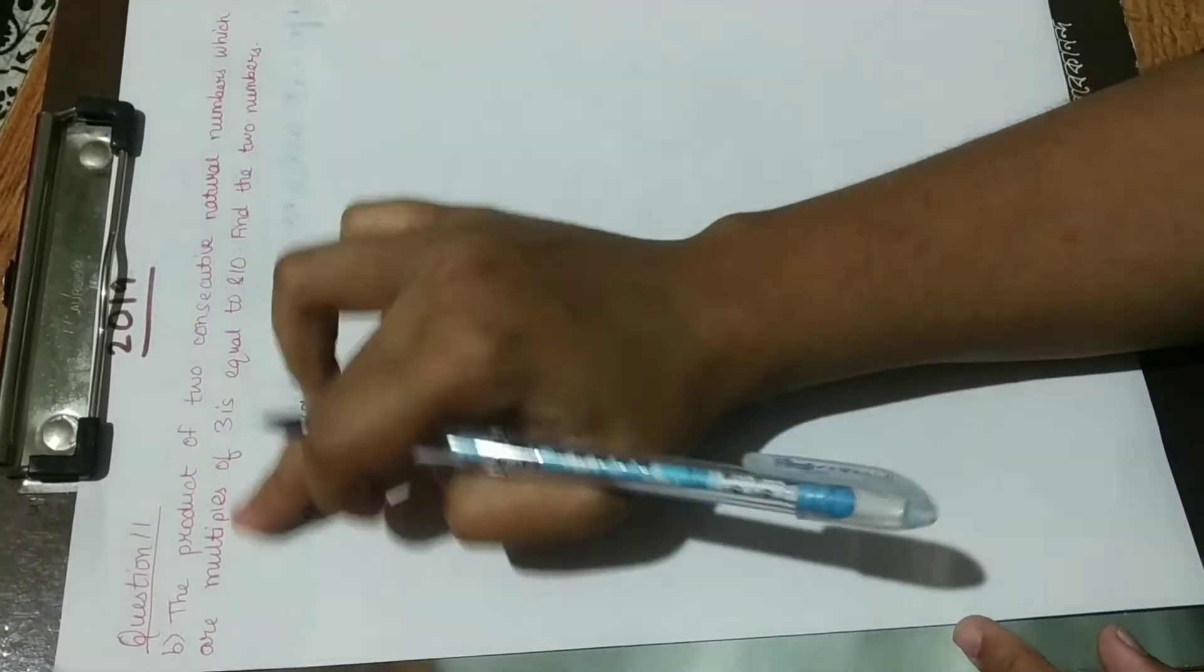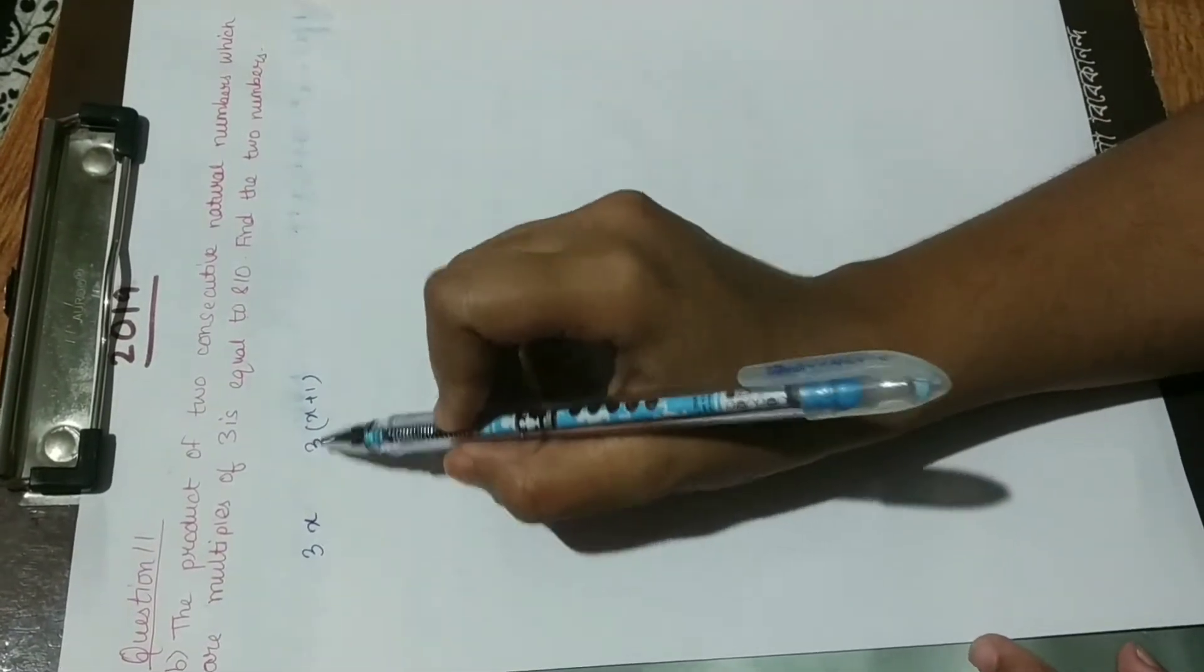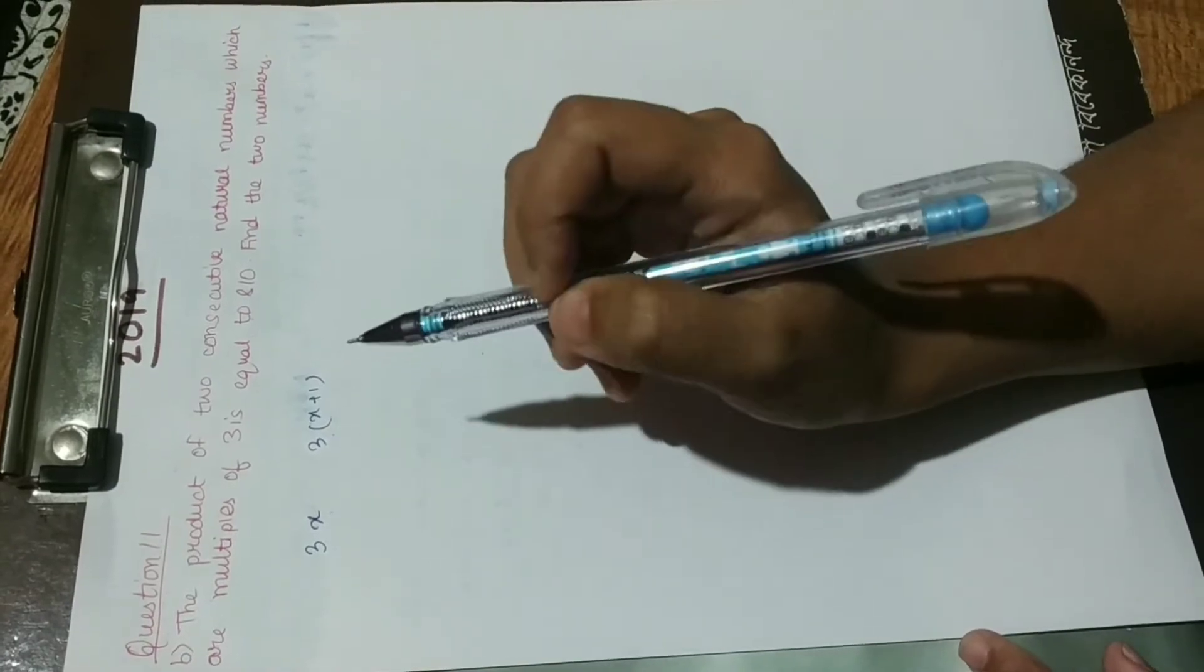So our two numbers are 3x and 3x plus 1. So according to the question, just let's go.